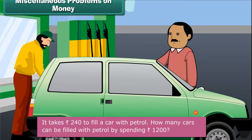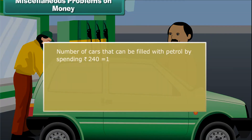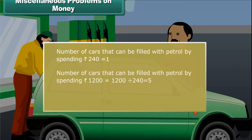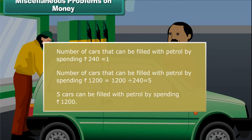It takes 240 rupees to fill a car with petrol. How many cars can be filled with petrol by spending 1,200 rupees? Number of cars that can be filled spending 240 rupees is 1. Number of cars filled by spending 1,200 rupees is 1,200 divided by 240, that is 5. Five cars can be filled with petrol by spending 1,200 rupees.